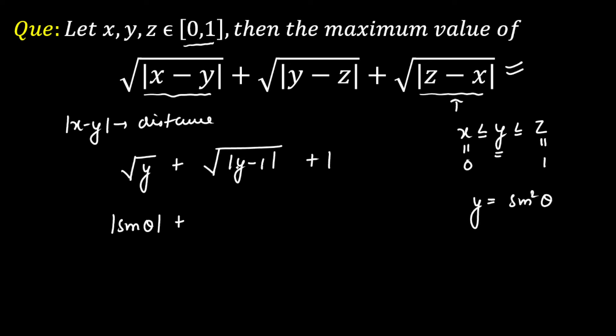And here since its mod is given, I can write sin square theta minus 1 or 1 minus sin square theta, so it will be equal to cos square theta, and root over cos square theta is mod of cos theta, and plus 1 here.